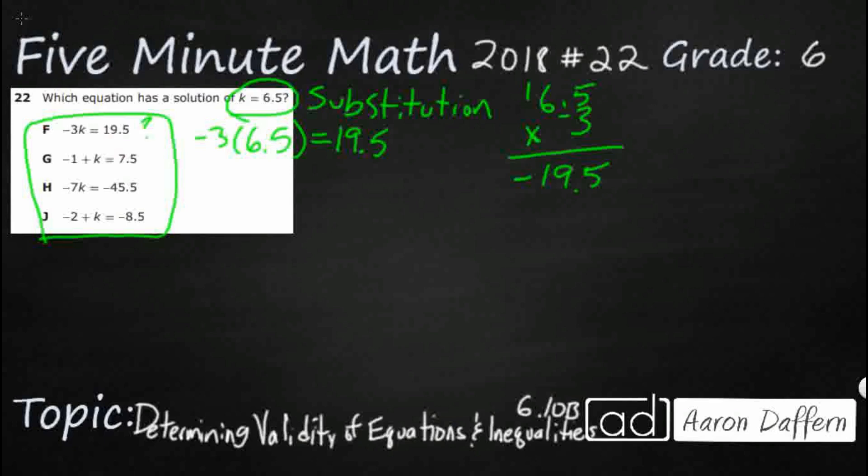Let's see what happens if we try it with G. Negative 1 plus 6.5 equals 7.5. Now if we take the 6.5 plus negative 1, it's the same thing as minus 1. A plus and then a negative just makes a negative. So plus negative 1 just makes a negative, so it's really going to be 5.5. Not going to work.